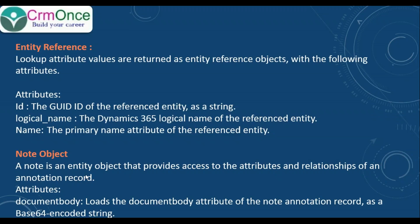The nodes object returns the following attributes. One key attribute is the document body — it returns the document body as a base64 encoded string, so we need to convert it to a string before we can display it in the portal.